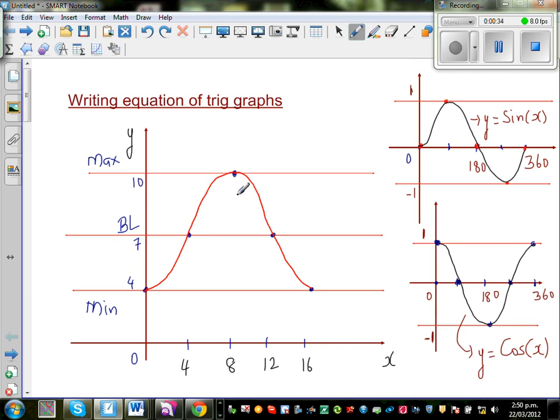Okay, so here let me write the important facts here. The baseline is very clear, is 7. The next important fact is your period. You're starting at 0 which is your minimum and you're coming back to minimum at 16. So your period is 16.